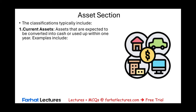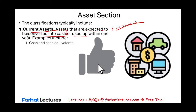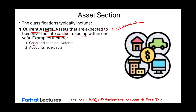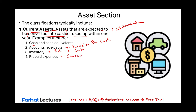Under the asset section, assets are typically broken down into two large categories. The first is current assets — those assets expected to be converted to cash, used up, or consumed within one year. Examples include cash and cash equivalents, accounts receivable (expected to be collected within one year), inventory (expected to be sold within one year), prepaid expenses (expected to be consumed within one year), and supplies.